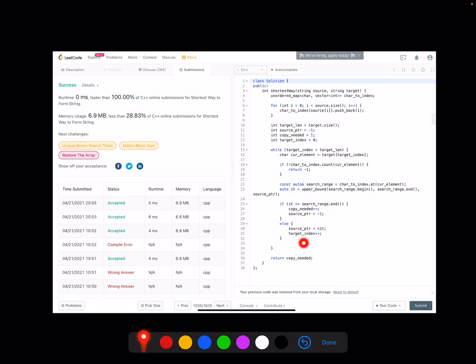So eventually when we finish the whole target array iteration, we return how many copies we need for the source string to formulate the target string.